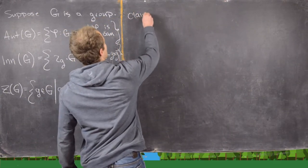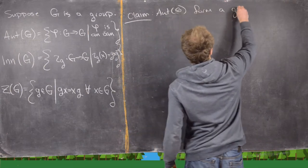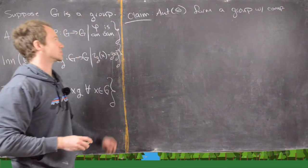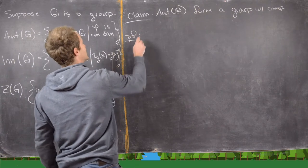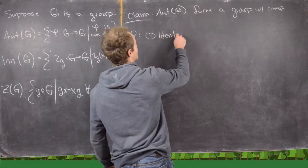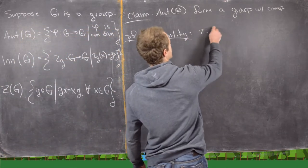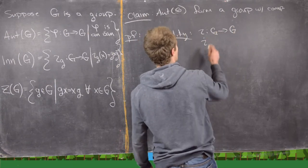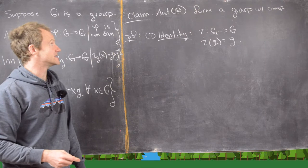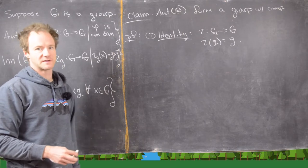The first thing I want to do is claim that the automorphisms of G form a group with composition of functions as the operation. The proof here is pretty straightforward. The first thing we want to notice is that we definitely have an identity — the identity map, iota from G to G defined by iota(g) = g. That's clearly an automorphism, and when you compose it with another automorphism you get back that automorphism.